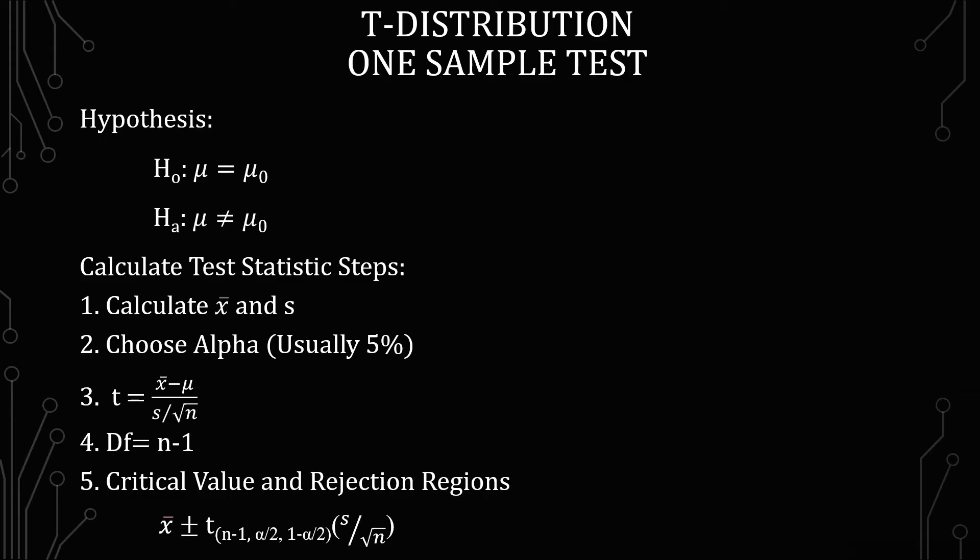The next thing we're going to go into is the critical value and rejection regions. We have the sample mean plus or minus the critical value times the standard deviation divided by the square root of n. The critical value uses both the degrees of freedom there. You can see the n minus 1, and then you've got the comma alpha divided by 2, and then 1 minus alpha divided by 2. What that is saying is it's a two-tailed critical value. We know this is a two-tailed test because the hypothesis is equal, not equal. If it was greater than or less than, then it would be a one-tailed test.